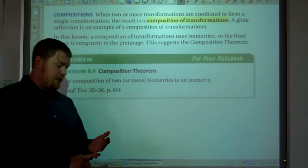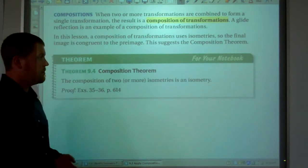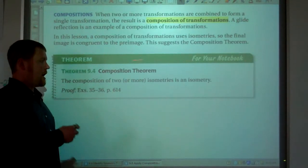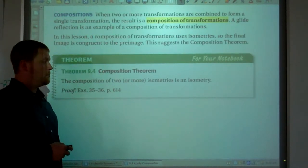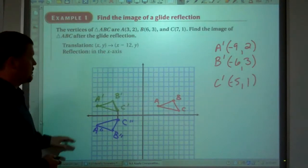Isometries. We've talked about translations being an isometry, reflections being an isometry, rotations being an isometry. The figures are congruent. Same thing. Your composition of two or more isometries, it's still an isometry. The figures are still congruent.